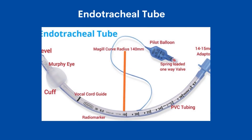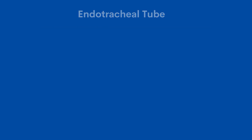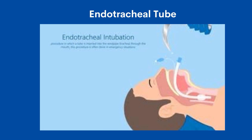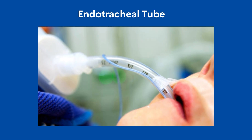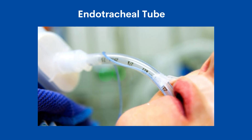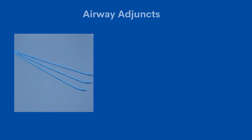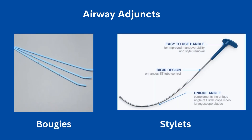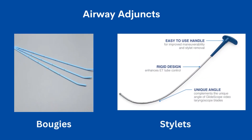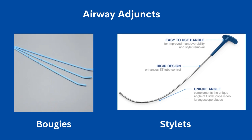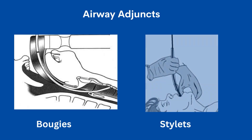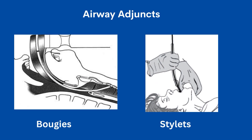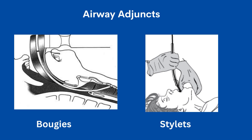The endotracheal tube is another type of artificial airway that is passed between the vocal cords through the trachea. It provides oxygen and inhaled anesthetic agents to the lungs and protects the airway from contamination such as gastric content or blood. When the vocal cords are visible but the endotracheal tube won't pass, a bougie comes to the rescue — it can aid tracheal intubation in difficult situations. Stylets are placed within the endotracheal tube before intubation and are used to hold the tube in a particular shape.